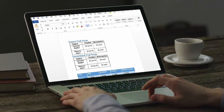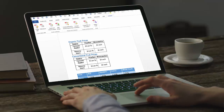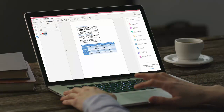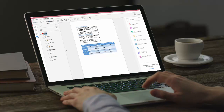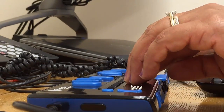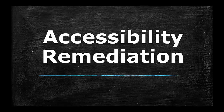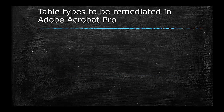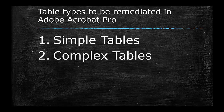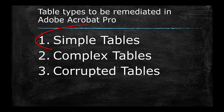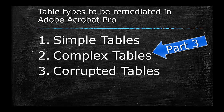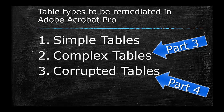In Part 1 of this series, you learned about things to consider and things to avoid in a Microsoft Word document with tables to make it easier to remediate when you convert it to an Adobe PDF file. If you follow the steps in Part 1, you will only need to do a few verifications and minor changes to ensure your PDF can be read by anyone using assistive technology. These verifications and changes are referred to as Accessibility Remediation. There are three types of tables that can be remediated in Adobe Acrobat Pro: Simple Tables, Complex Tables, and Corrupted Tables. In this tutorial, we'll discuss how to make a Simple Table accessible. Accessibility Remediation of Complex and Corrupted Tables will be discussed in Parts 3 and 4 of this training series.